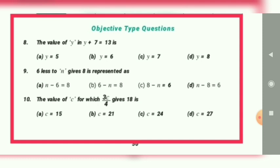Objective type question, first one. The value of y in y+7 equals 13. Which number to be added with 7 to get 13? What is the answer? We have to check it out. Put y equals 5: 5+7 equals 12, so it is not the answer. Put y equals 6: 6+7 equals 13. So what is the answer? B.